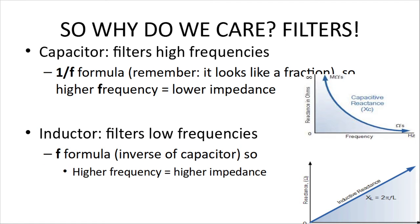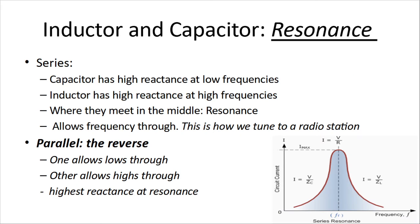Now, why do we care about this? Well, it's filters. So let's take a look at how the two are opposites. The capacitor is a 1 over F formula, F on the bottom. So the higher the frequency, the lower the impedance is going to be, or lower the capacitive reactance. Because the inductor has the frequency at the top. So the higher the frequency, the higher the impedance, or the higher the reactance is going to be.